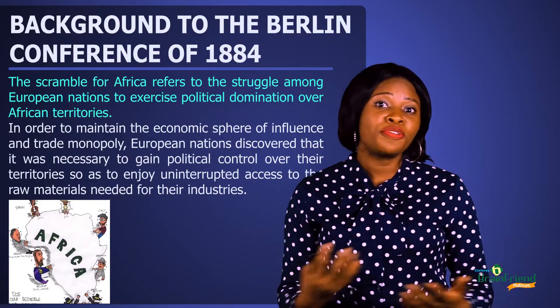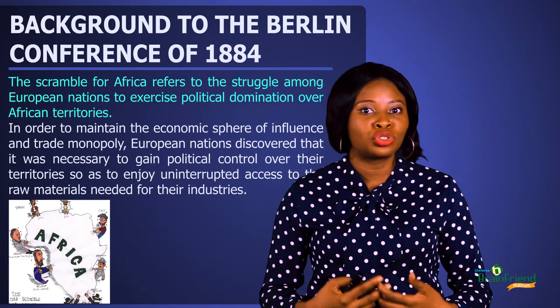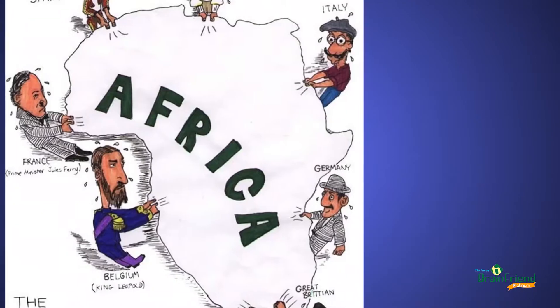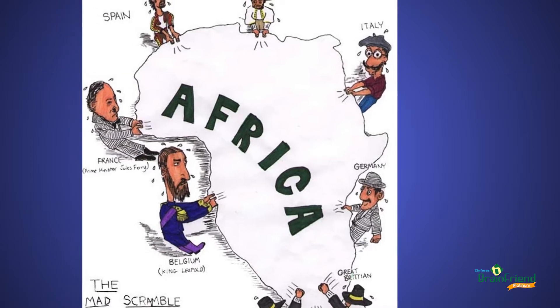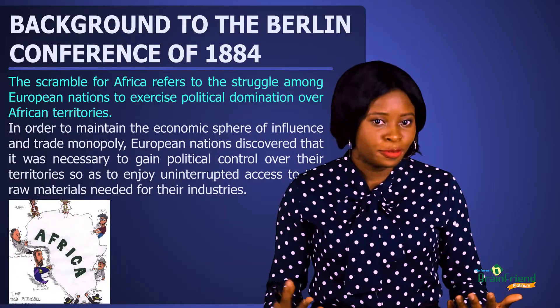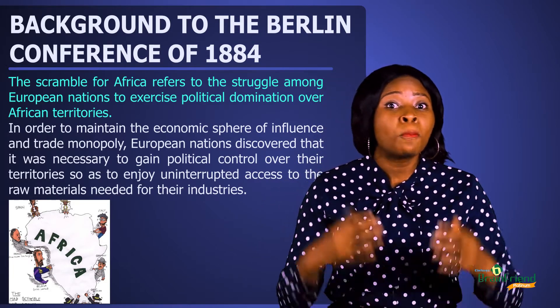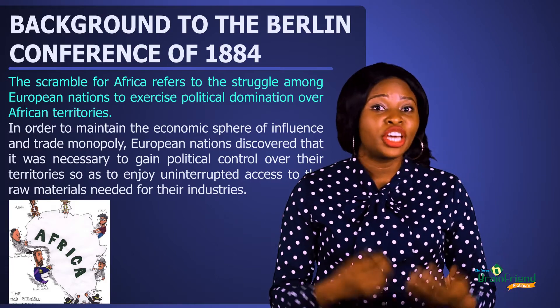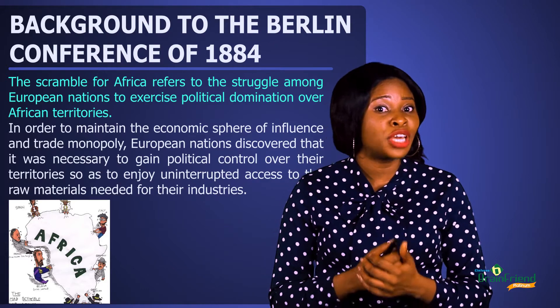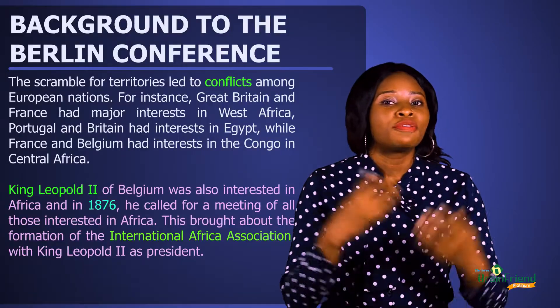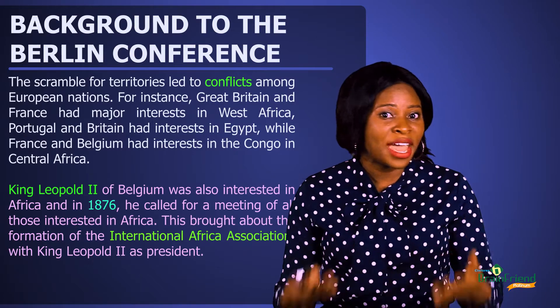Another factor responsible for the Berlin Conference was the Scramble for Africa. The Scramble for Africa refers to the struggle among European nations to gain political domination over African territories. These European nations wanted a piece of Africa for themselves. They discovered that for them to have uninterrupted access to raw materials, they needed to gain political control over these African countries. They also discovered that it would help them maintain their economic sphere of influence and trade monopoly. When two or more persons are interested in a particular thing, conflict is bound to set in, and this was the case in Africa among the European nations.